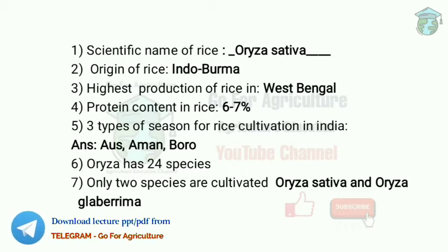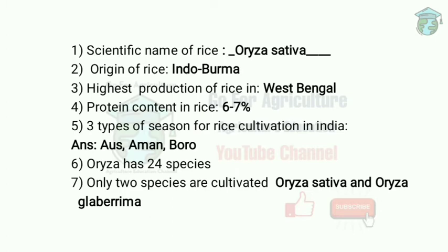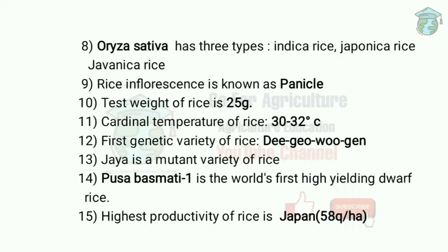Oryza has 24 species, but only two species are cultivated: Oryza sativa and Oryza glaberrima. Oryza glaberrima is cultivated in South Africa, and Oryza sativa in India, Japan, and Indonesia. Oryza sativa has three types: Indica, Japonica, and Javanica. Indica is tropical Indian rice with late maturity and long stem. Japonica has short stem and early maturity. Javanica is the wild form cultivated in Indonesia.